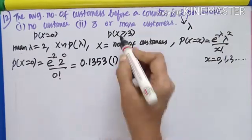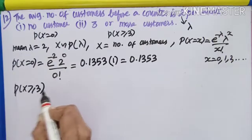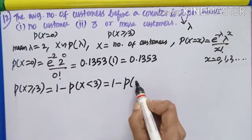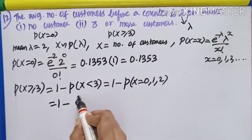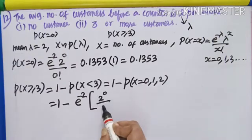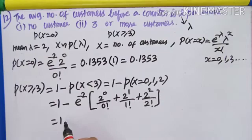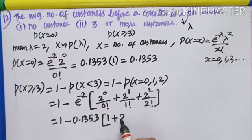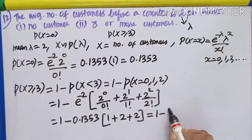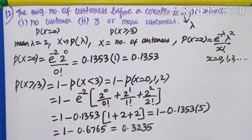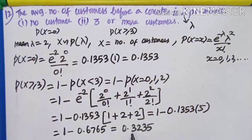Second question, x ≥ 3: using the complement, 1 − P(X = 0, 1, 2). So 1 − e^(−2)[2^0/0! + 2^1/1! + 2^2/2!] = 1 − 0.1353 × (1 + 2 + 2) = 1 − 0.1353 × 5 = 1 − 0.6765 = 0.3235. So the probability of three or more customers is 0.3235.